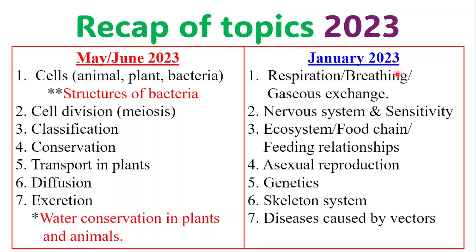For January 2023, we look at respiration, breathing, gas exchange, nervous system, sensitivity, ecosystem, food chain, feeding relationships, sexual reproduction and asexual reproduction — but specifically they were more geared towards asexual reproduction. Some genetics, Punnett square, skeletal system, and diseases caused by vectors.